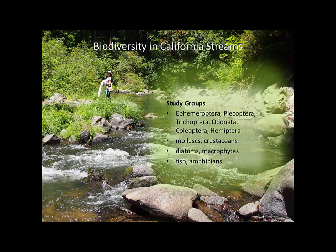The study groups we focused on in our biodiversity assessment were several orders of aquatic insects, including EPT, Odonata, Coleoptera, and Hemiptera. We also reviewed mollusks, crustaceans, diatoms, macrophytes, fish, and amphibians. We did this work in 2012, and the data came largely from museum collections.